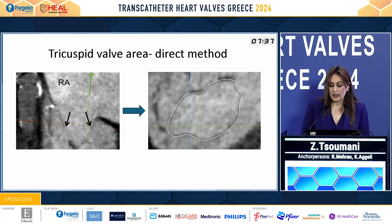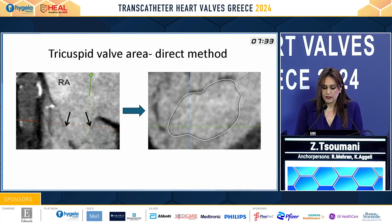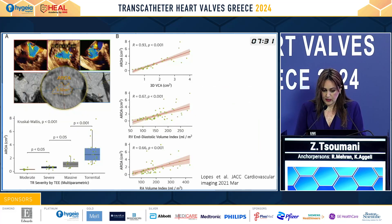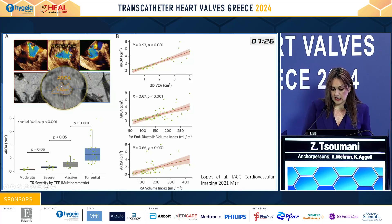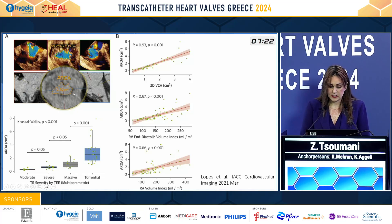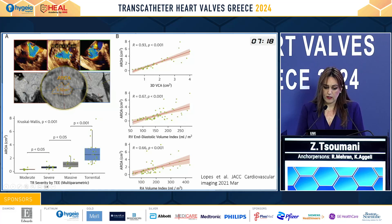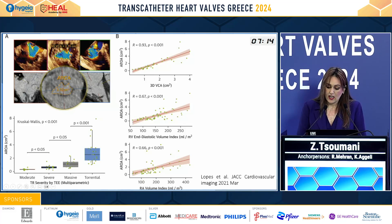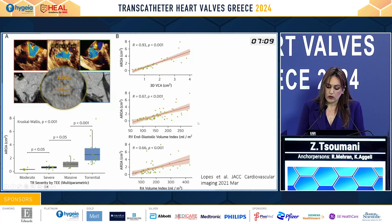We can apply the same technique to measure the gap — the tricuspid valve area. Studies have shown that this gap, measured as the anatomical regurgitant orifice area, correlates very strongly with the vena contracta as assessed by 3D TEE, and moderately correlates with right ventricular and right atrial remodeling.